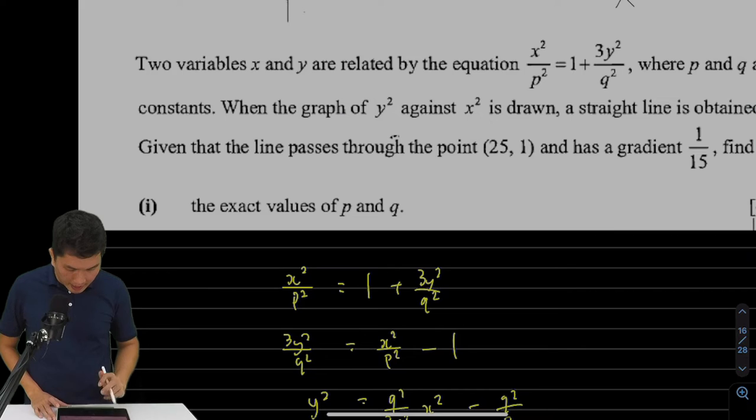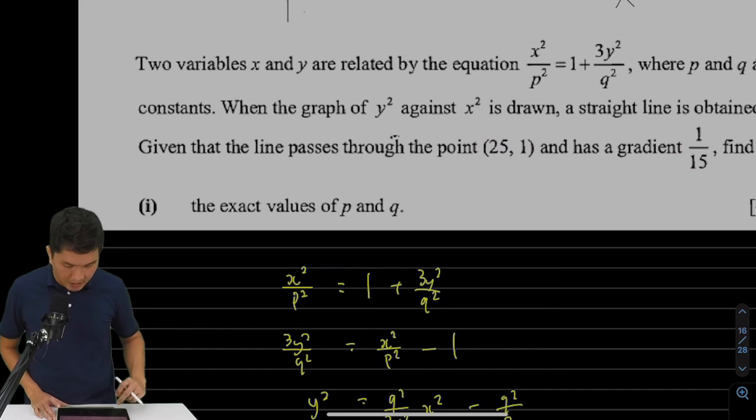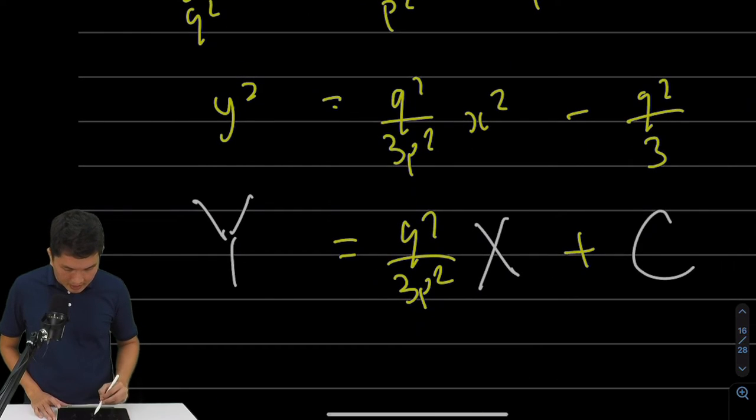It says that this line passes through the point 25, 1 and has a gradient of 1 over 15. So that means my m, this is 1 over 15. And if I substitute x equals to 25, y equals to 1, this equation will be true.